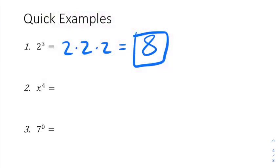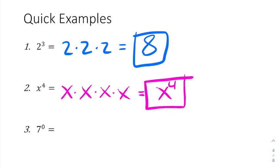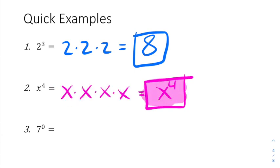The next problem is x to the 4th. This means four x's being multiplied together, but there's nothing you can really do to simplify that, so we just leave it written as x to the 4th. The intermediate work was unnecessary — we would really just leave it where it started.